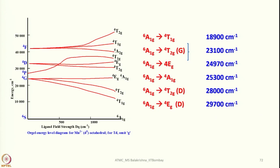For D5 configuration, ⁴G is split into three states, ⁴F splits into triple and single degenerate states, ⁴P is a single state, and ⁴D splits into triplet and doublet states, giving about 11 excited states total. The Orgel energy level diagram for manganese D5 in octahedral geometry is shown; for tetrahedral geometry, omit the G subscript and reverse it.